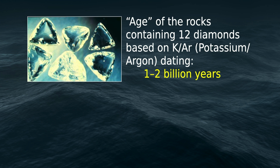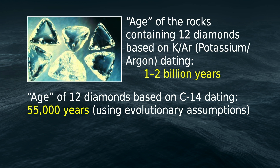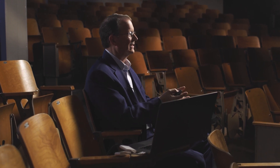Diamonds are also 100% pure carbon, so creation scientists got diamonds from rock layers that by potassium-argon dating were considered one to two billion years old. When they applied carbon-14 dating to the diamonds, they found an age of about 55,000 years using evolutionary assumptions. How can you have 55,000-year-old diamonds completely encased in one-to-two-billion-year-old rocks? It doesn't make sense, and it calls both dating methods into question.